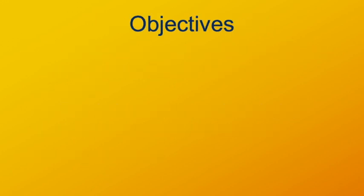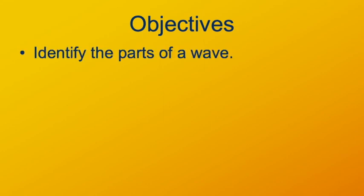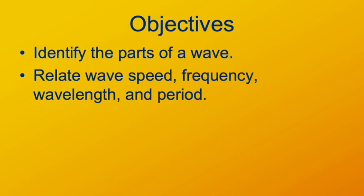What we're going to cover in this lesson is, first, the basics of a wave — some vocabulary so that we can discuss waves, identifying the parts, and more importantly, relating the parts to each other: quantities like wave speed, frequency, wavelength, and period. Frequency and period you already know from oscillations, and they have the same meaning when talking about waves. Wave speed and wavelength are new quantities pertinent to waves, though not to oscillations.